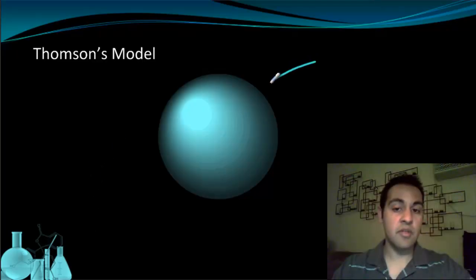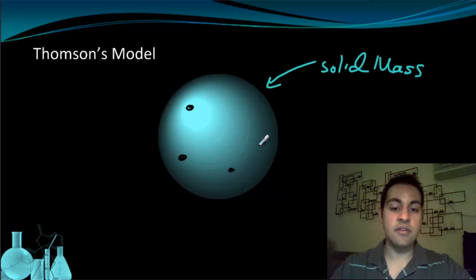So in Thomson's model, the atom is still a solid mass, just like it is in Dalton's. It's a solid mass. But now there are tiny electrons scattered all the way through this atom. And these electrons are all significantly smaller than the atom and they all have a negative charge. So the other thing he added was that this solid mass had to have a positive charge to balance out all the tiny negative charges of the electrons.